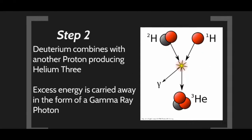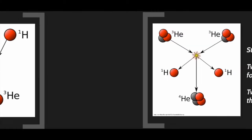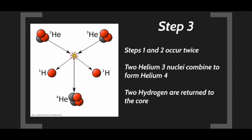In step two, the deuterium — a proton and a neutron from step one — is joined by another proton. This makes a more stable nucleus: a rare isotope called helium-3. The process also releases energy in the form of a gamma ray, which is carried into the radiative zone as part of the Sun's power. So deuterium combining with another proton produces helium-3 in step two.